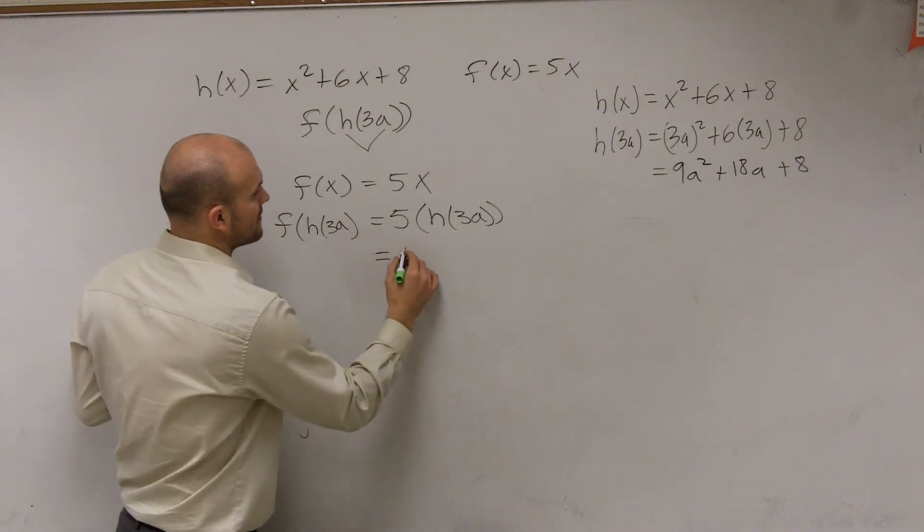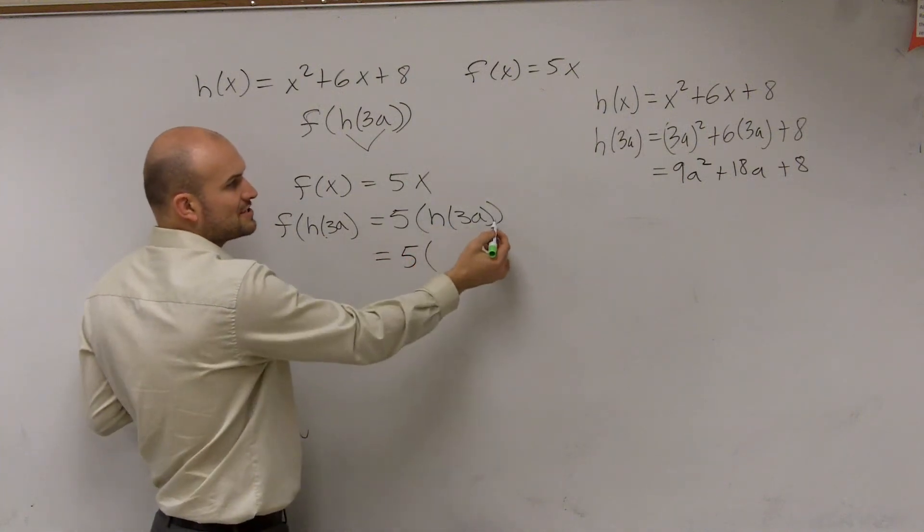So therefore, it's going to equal 5 times what is h of 3a? It's right here.